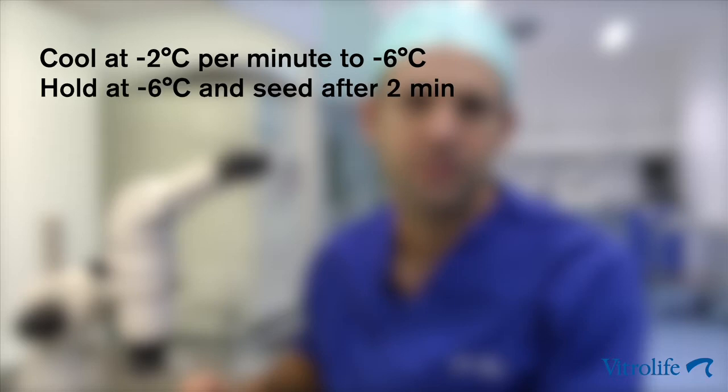Hold at minus 6 degrees Celsius and manually seed after 2 minutes. Keep the straw at minus 6 degrees Celsius for a total time of 10 minutes. Do not seed close to the embryo.